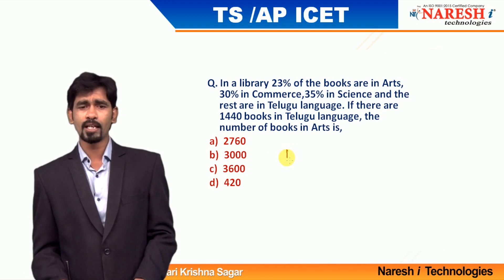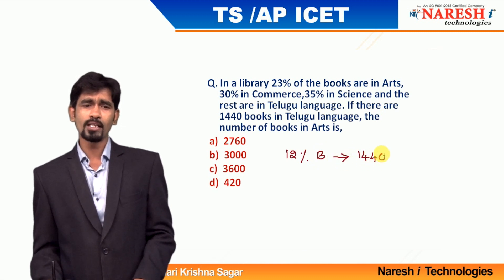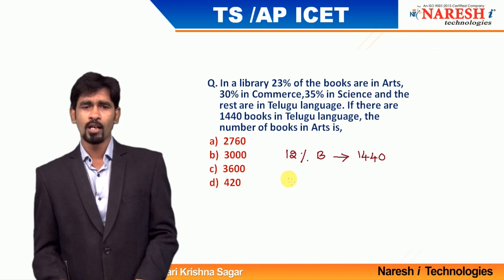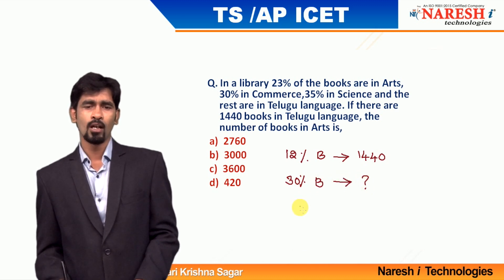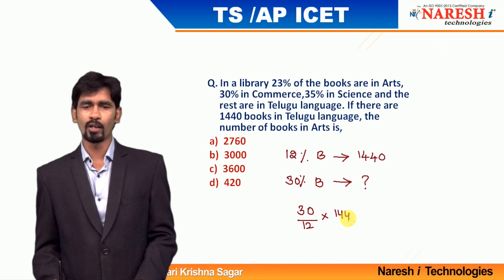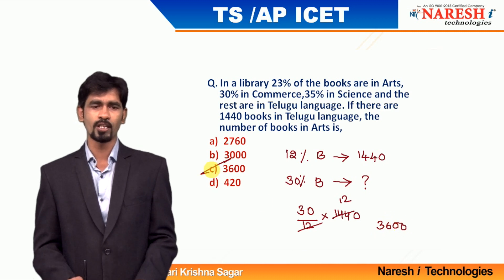So 12 percentage of the books are leftover Telugu books. That means 12 percentage of the books is equal to 1440. We need to find the number of arts books, which we can see is 30 percentage. If 12 percentage equals 1440, then 30 percentage equals: 30 divided by 12 into 1440. Since 12 into 12 is 144 and 12 into 3 is 36, add two more zeros — mark your answer choice as option C: 3600.